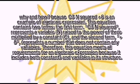Why and how? Because 3n squared plus 8 is an example of algebraic expression. This equation contains two terms. The first term, 3n squared, represents a variable raised to the power of 3 multiplied by a constant.